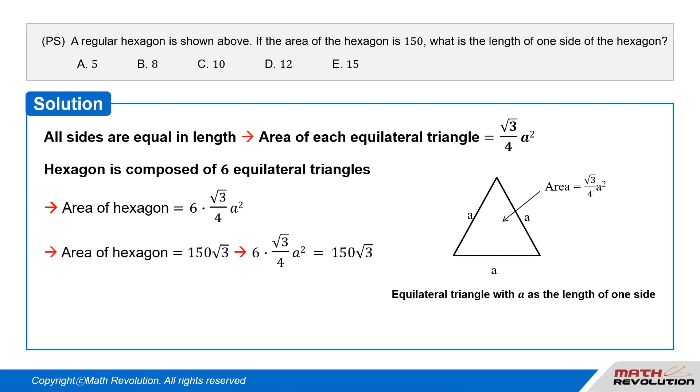This equals 150√3, the area of the hexagon given in the question. So, 6(√3/4)A² = 150√3.